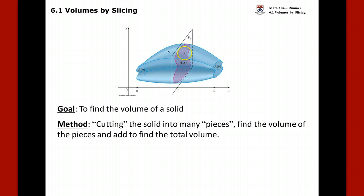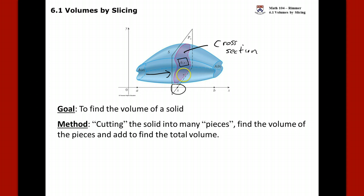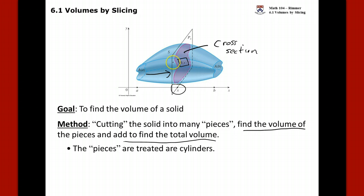We need a formula that represents the area of the cross section — this red shape here is called a cross section. The hardest part is setting up and figuring out a formula for the area of this cross section depending on what X is. As we move from left to right it changes, and we cut the solid into many pieces to find the total volume.